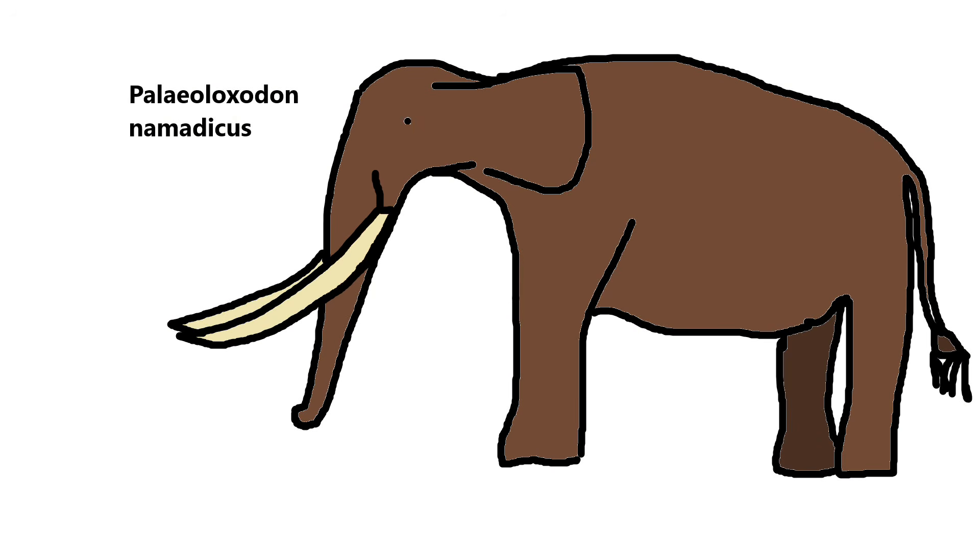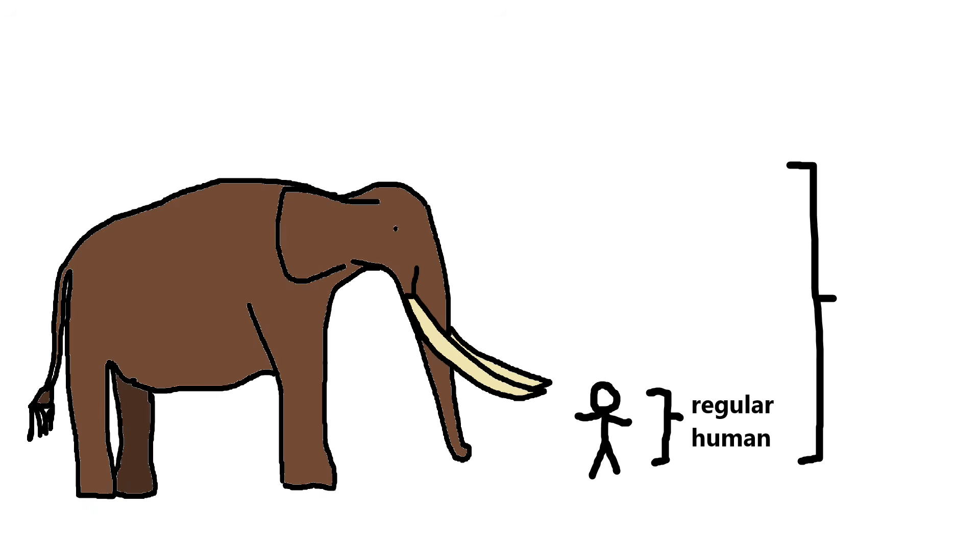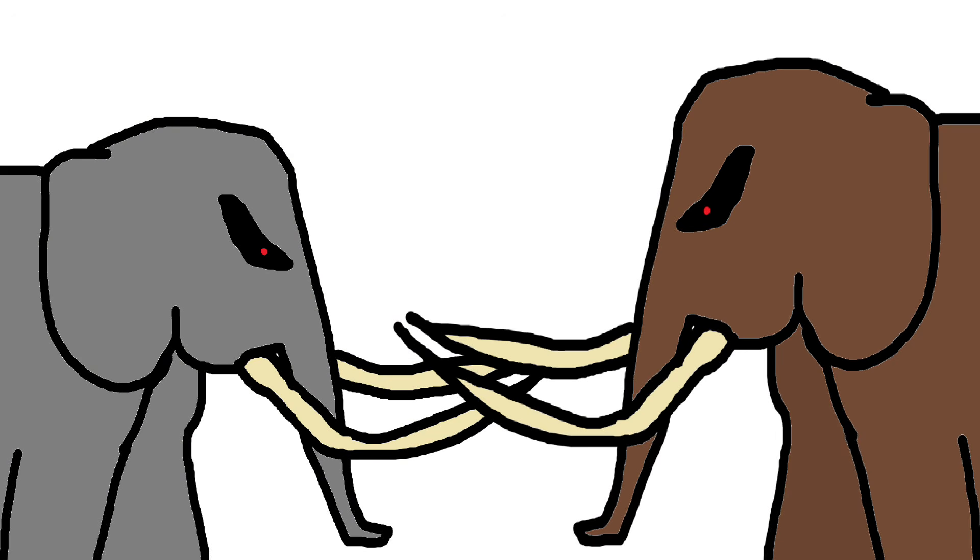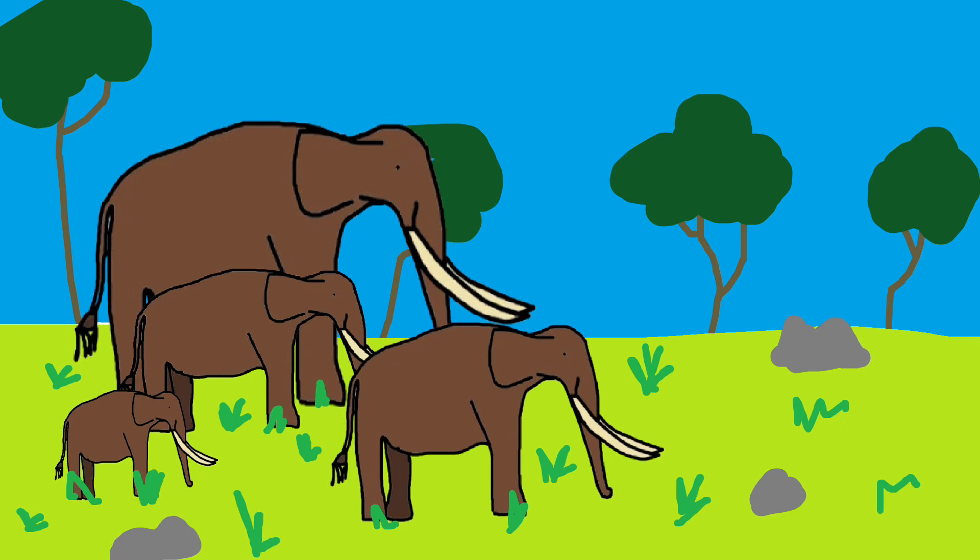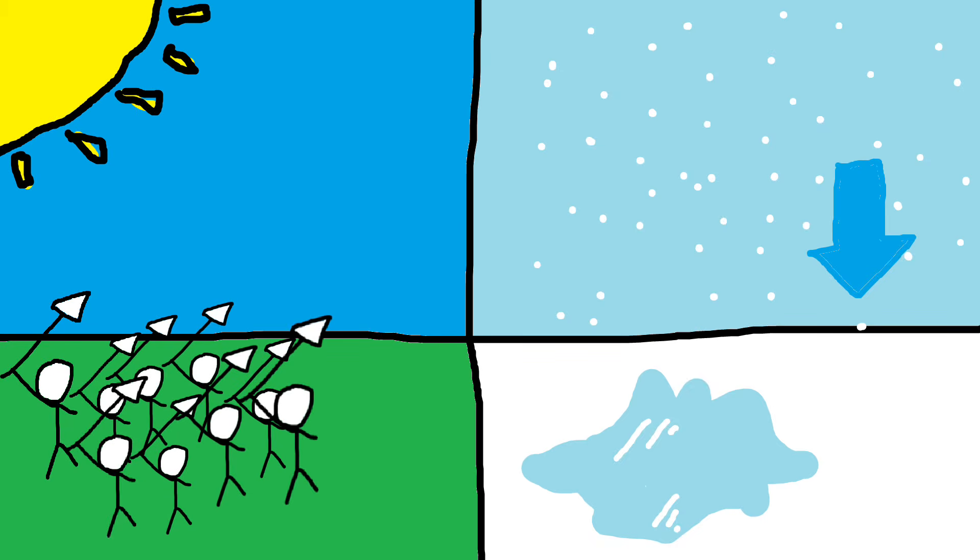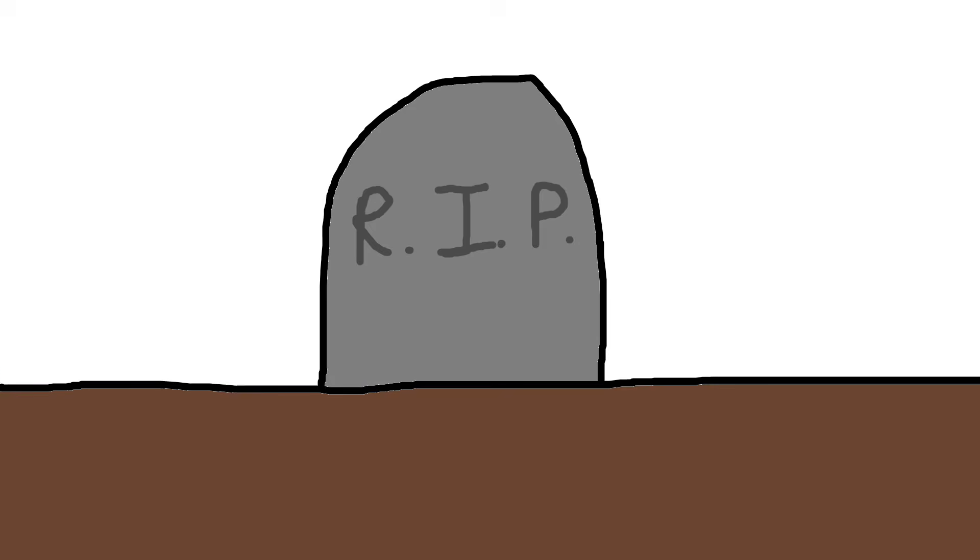Palaeoloxodon namadicus was a prehistoric giant, the largest elephant species and possibly the biggest land mammal ever. It stood 16 feet tall at its shoulder and weighing up to 22 tons. This elephant towered over its contemporaries in the Pleistocene landscapes of Asia. It had straight tusks stretching over 13 feet, and they were likely used for foraging and self-defense. Despite its numerous menacing features, it fed on vast quantities of vegetation as a herbivore. Climate shifts and human competition are believed to have led to the decline of this colossal species, leaving only its fossils to tell its story.